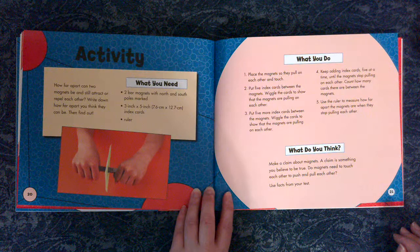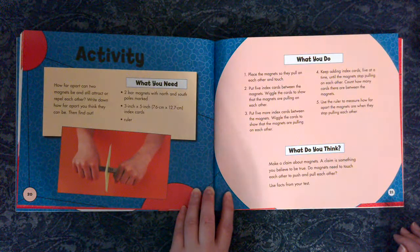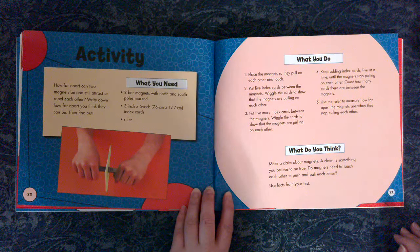Activity. How far apart can two magnets be and still attract or repel each other? Write down how far apart you think they can be, then find out.